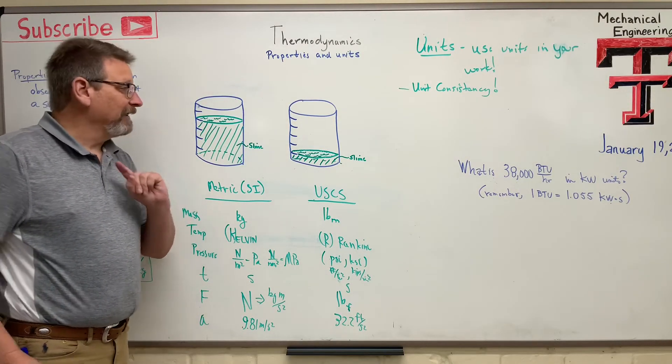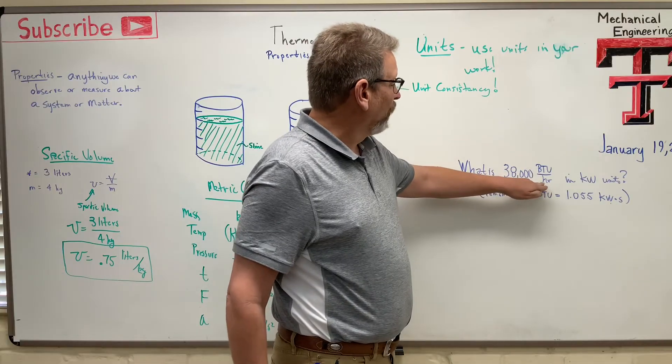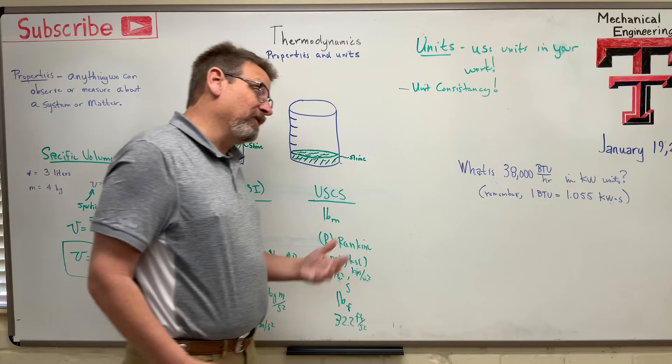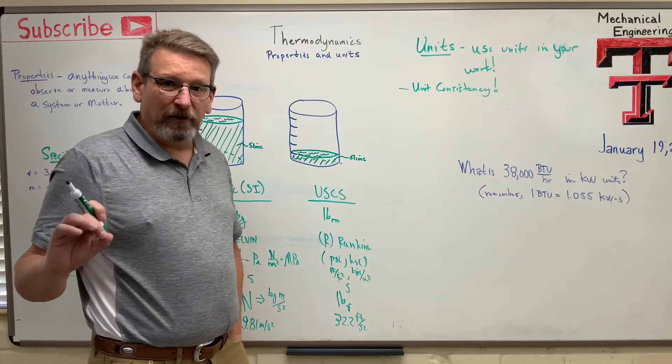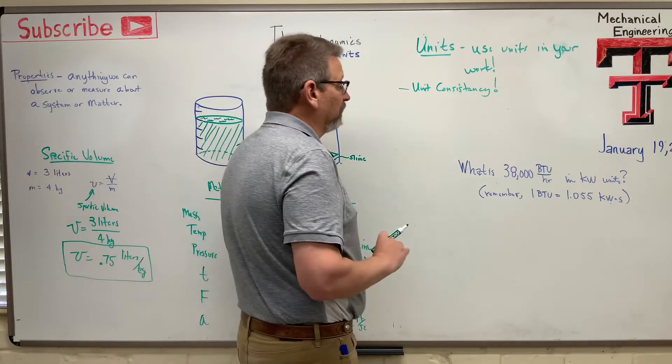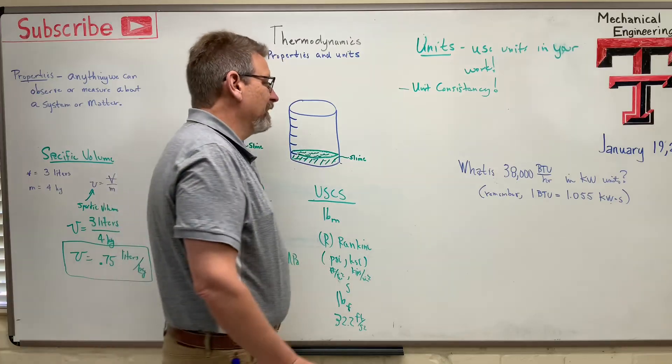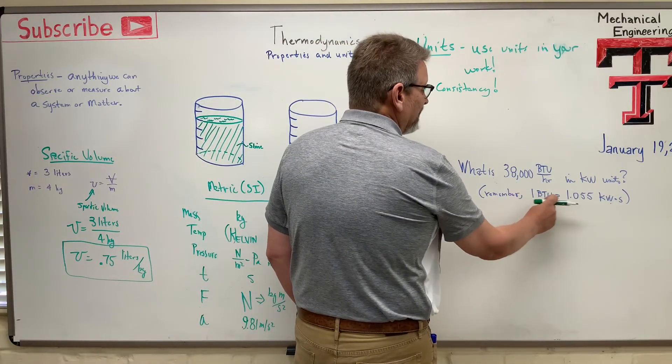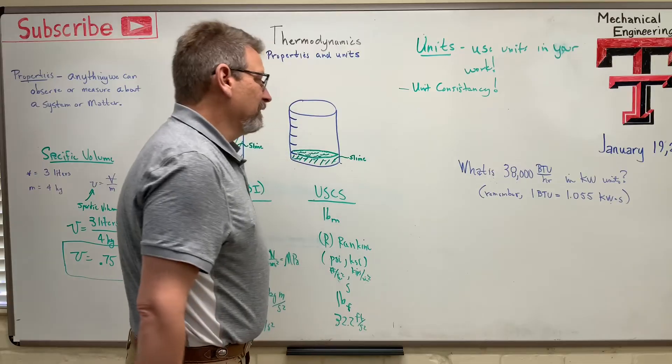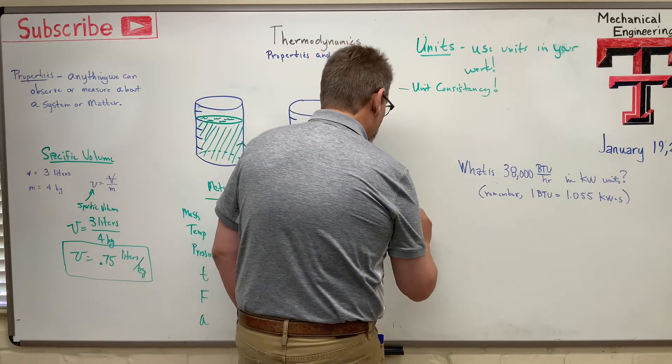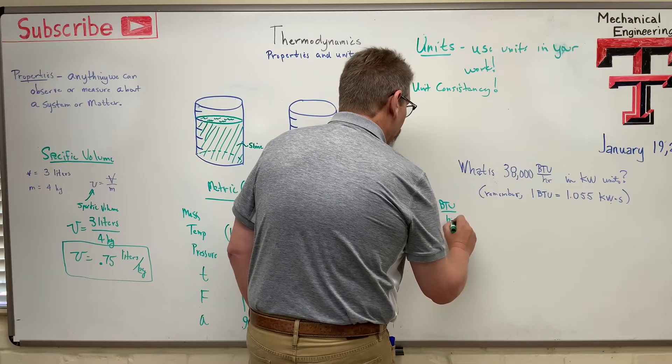Now, one more thing, and then I'll leave you alone. And that is, let's work this little problem out here. It says, what is 38,000 BTU per hour in kilowatt units, okay? So we're going to have to remember another conversion factor to do this. And I'm going to show you how I do this. And I hope you do it the same way because I call this getting Mickey Mouse with your units. So I want you to be getting Mickey Mouse with your units and cancel them out, okay? What is BTU? Do you remember? BTU is a British thermal unit, okay? And we remember that one British thermal unit is equal to 1.055 kilowatt seconds, okay?